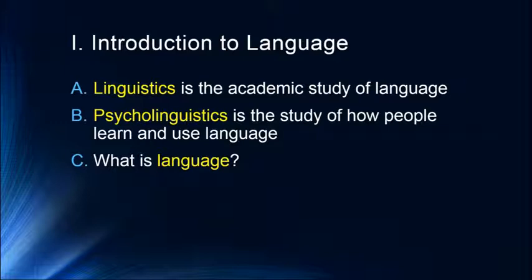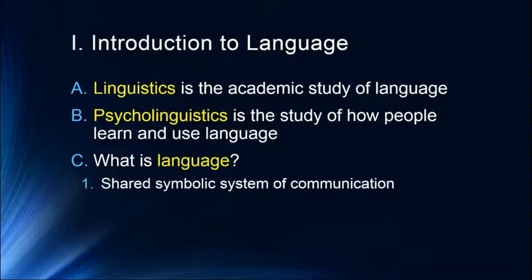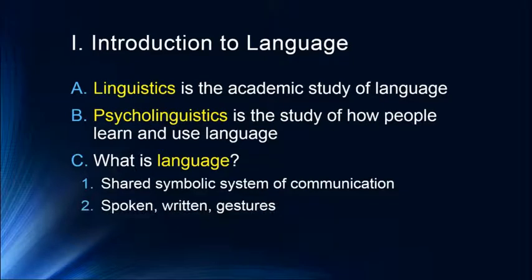Language is obviously a skill — it requires memory, knowledge, and all of the things we've talked about. Language is in itself simply a shared symbolic system of communication. Languages can be spoken, written, or gestural — all of those, or only one of those. All of these are examples of different types of symbolic systems of communication. One could even argue that emojis are potentially a part of language because they are a shared symbolic system of communication, assuming you know what they're trying to communicate.